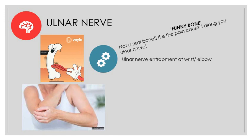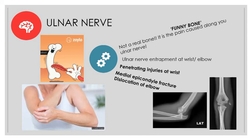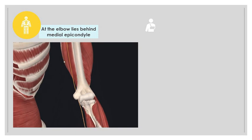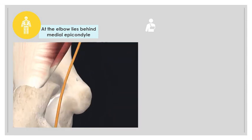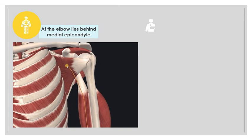The ulnar nerve travels through several tight spaces along its course where entrapment or compression can occur — at the elbow through the cubital tunnel, and at the wrist through Guyon's canal, both common areas of entrapment. Penetrating wounds at the wrist can also damage the nerve directly; unlike the median nerve, the ulnar nerve travels above the retinaculum, making it more vulnerable to such injuries. Fractures of the medial epicondyle or dislocations at the elbow, as shown in the X-rays, can also cause damage. The ulnar nerve travels down the medial side of the upper arm and passes posterior to the medial epicondyle — a point you can palpate and appreciate as particularly vulnerable.